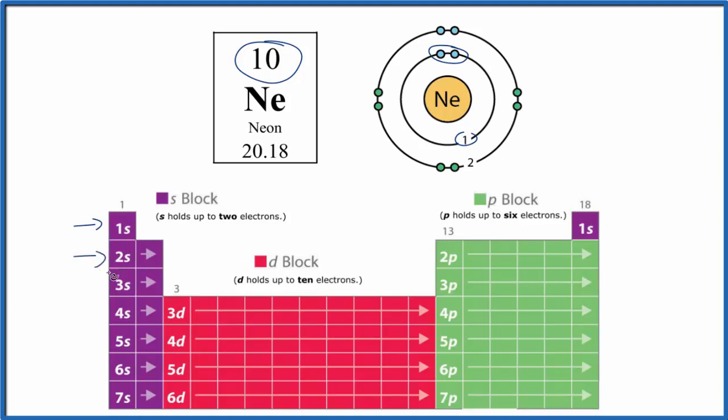We have to go to the second energy level. In the second energy level, we have one, two, three, four, five, six, seven, eight. So we can have up to eight electrons in the second energy level.